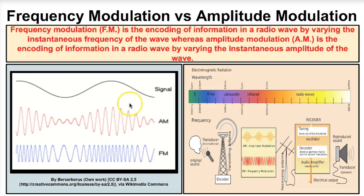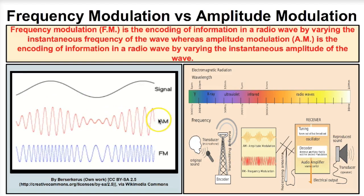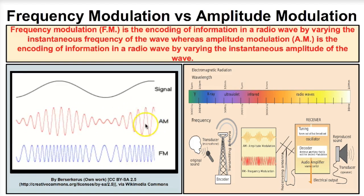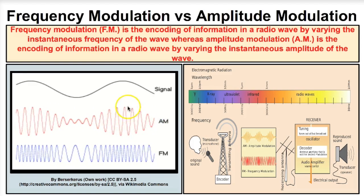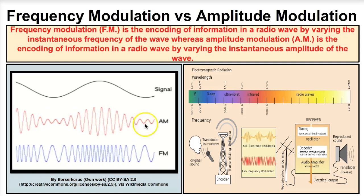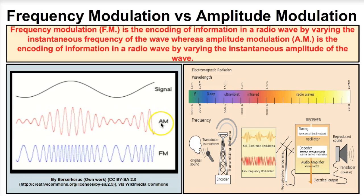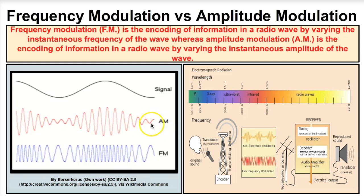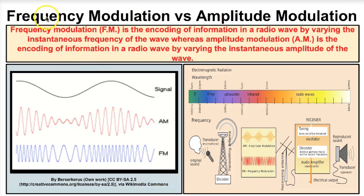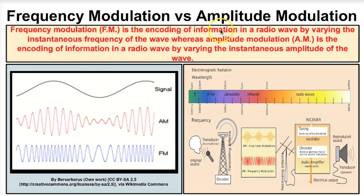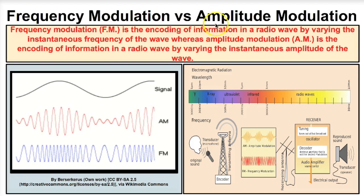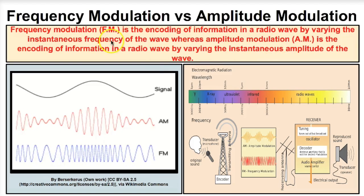At an AM radio station, they adjust the amplitude of those radio waves — the wave height. For example, really big amplitude here, really small amplitude there. That radio station is adjusting the amplitude. Understand the difference between FM radio waves and AM radio waves: frequency modulation versus amplitude modulation.